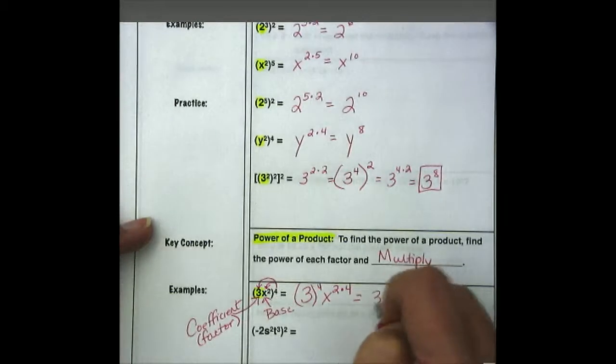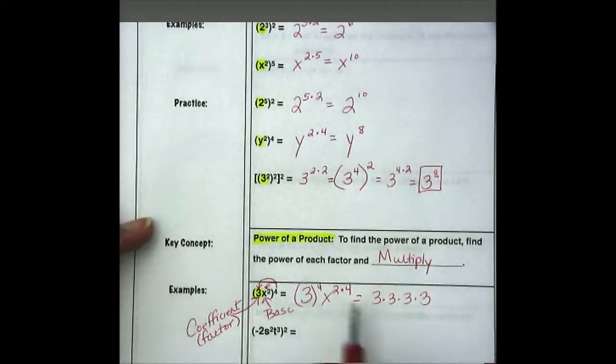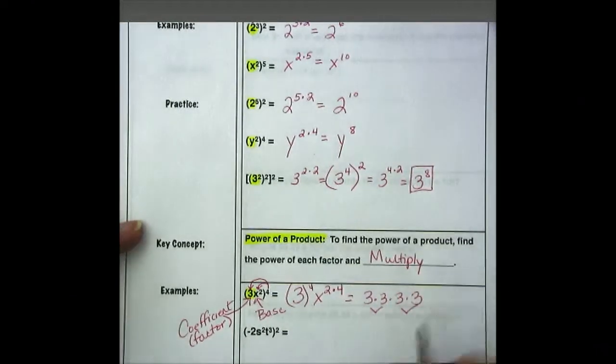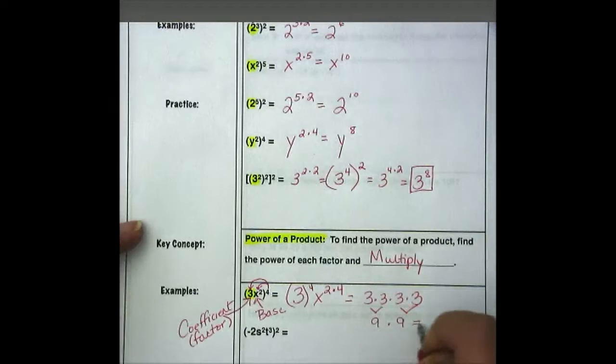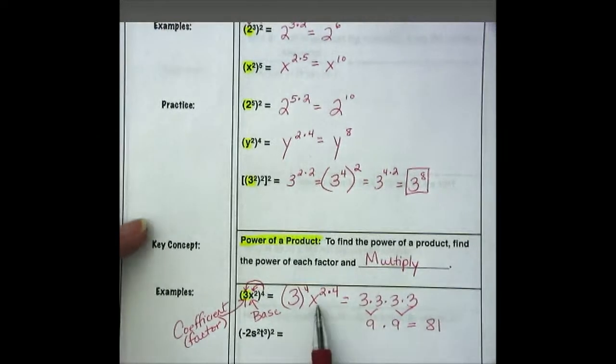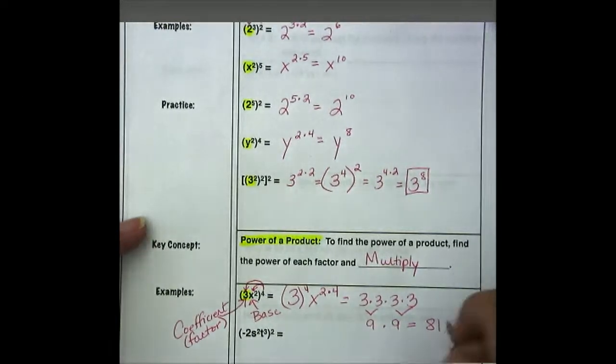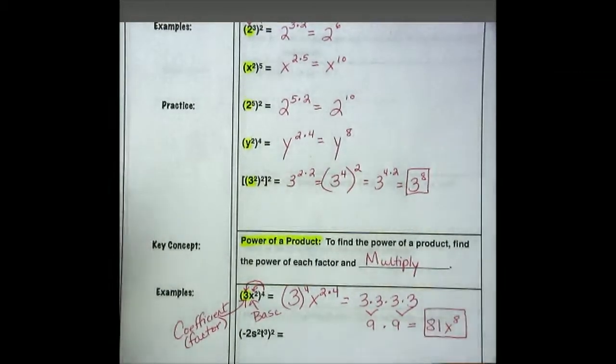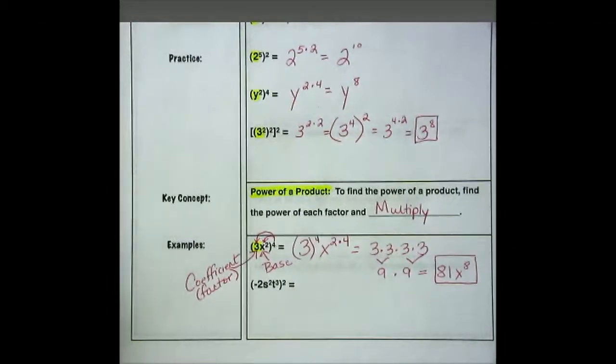So we get 3 times 3 times 3 times 3. That's 3 to the 4th. When we multiply those out, we get 9 times 9, which is 81. And then x to the 2 times 4 is x to the 8th. So the answer would be 81x to the 8th power.